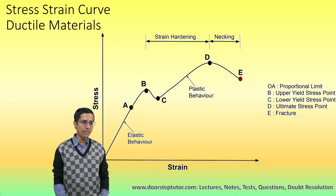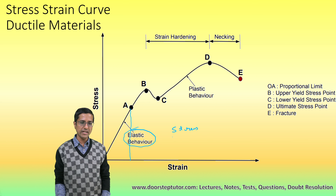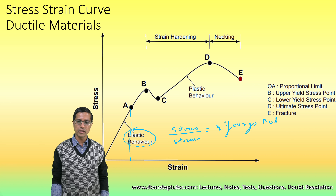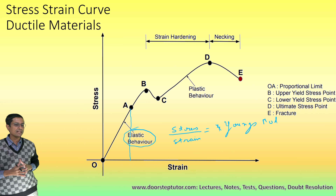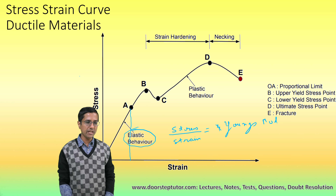The very first region is the most important region, in which there is perfect elastic behavior for the ductile material. This is also known as Hooke's law region, and in this region the stress and strain are proportional — in other words, the ratio of stress divided by strain is a constant. For the case of change in length, this constant is the Young's modulus.